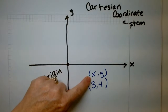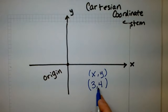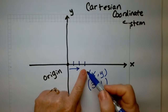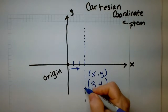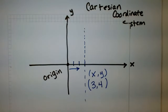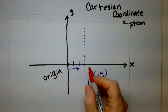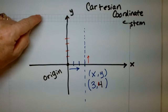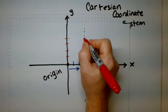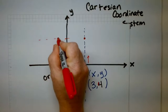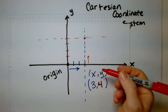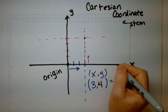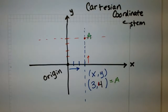We always start at the origin and we always graph the x first. This is in the positive 3 direction — both of these numbers are positive, so we go that direction. Go 1, 2, 3 — make yourself three tick marks. X could be anywhere on this line because it's over 3. Then we have a 4 here — positive 4 — so we go up: 1, 2, 3, 4. Y could be anywhere on this line, and where they cross is only one place. I'm going to call this point A.